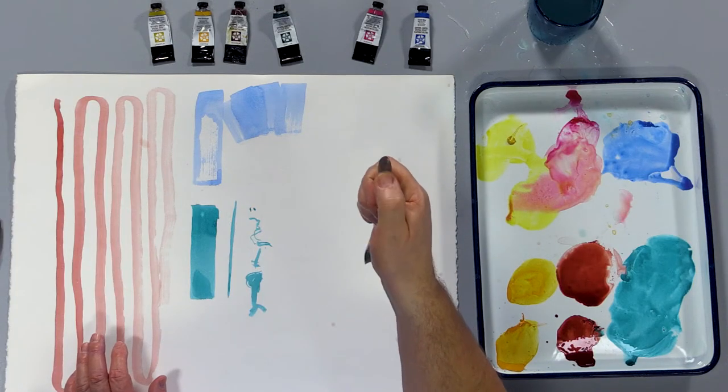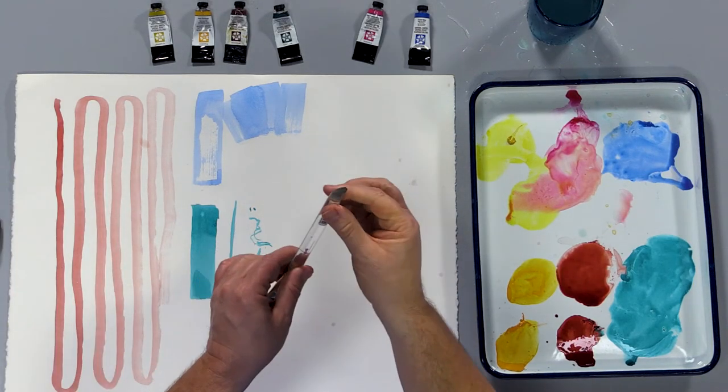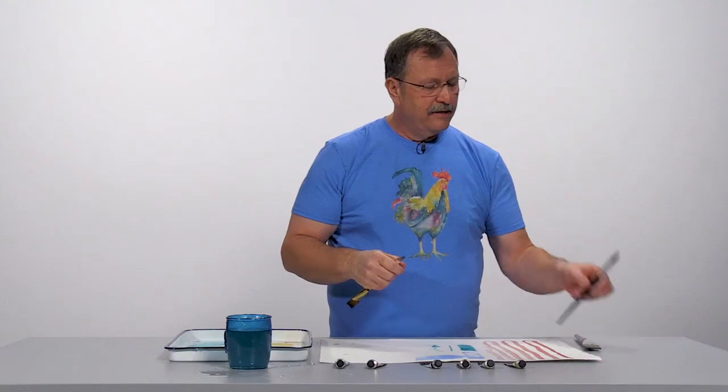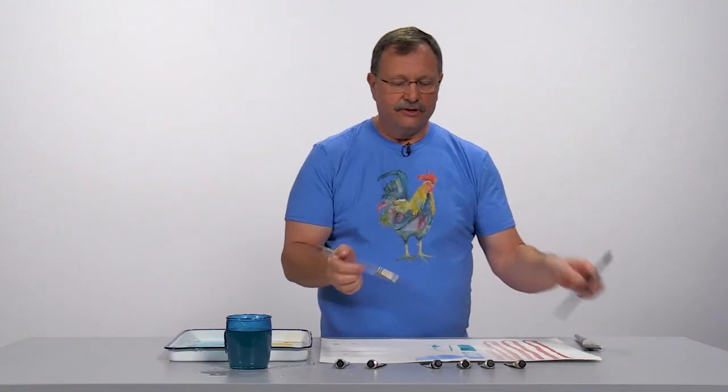One other thing I want to show you on types of brushes is the tip. That's another thing that they add into some brushes. This brush has what they call an aquarelle end to it. This brush does not, it's just got a regular rounded handle to it.